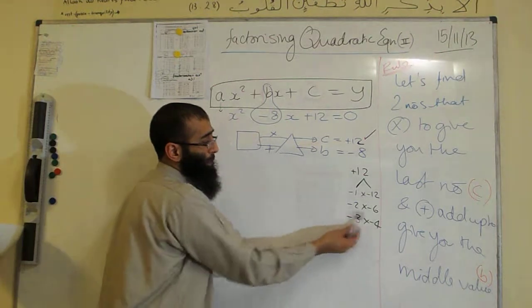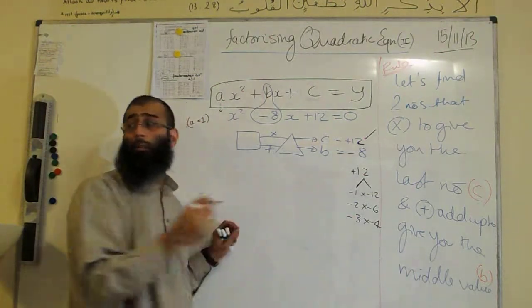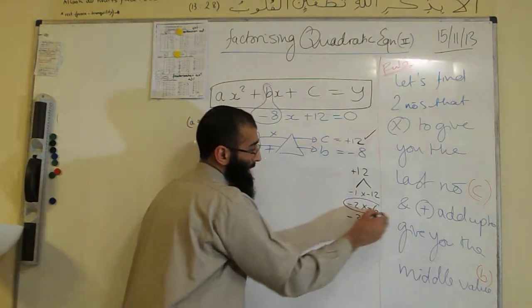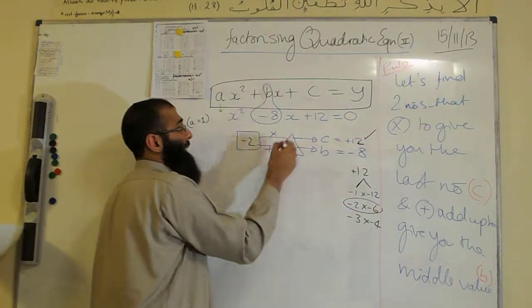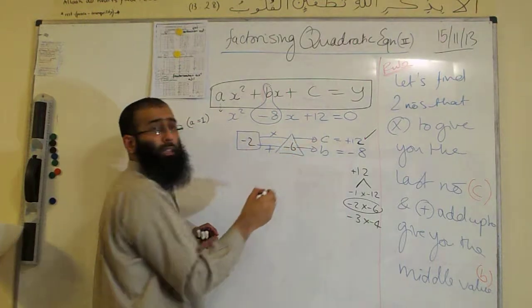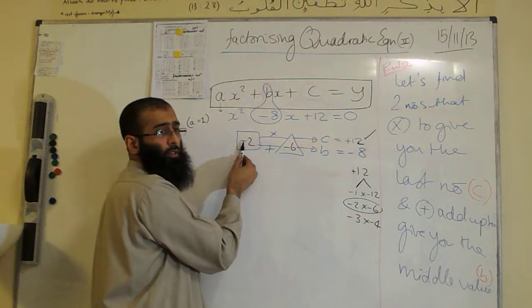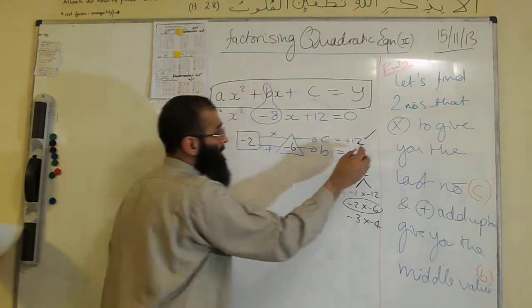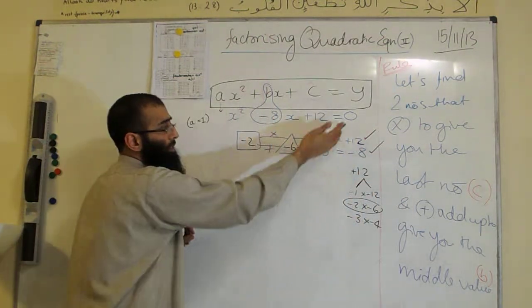Which one of these factor pairs gives us an additional sum of minus 8? Excellent. So let's put them in here: minus 2, minus 6. Let's check this. Minus 2 add minus 6, is it equal to minus 8? Yes. Fantastic, so both conditions are done.